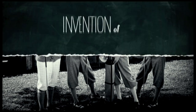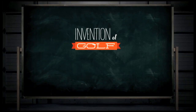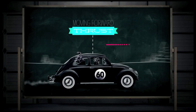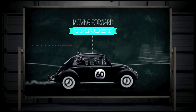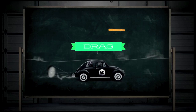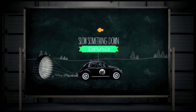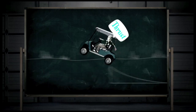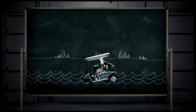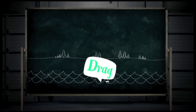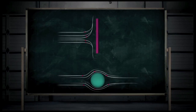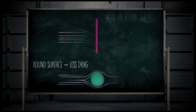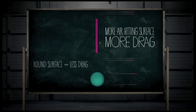With the invention of golf, man encountered two other forces of aerodynamics: thrust and drag. Thrust is the force that keeps an object moving forward. Drag is an opposite force that slows something down and makes it harder for an object to move. This golf cart has enough thrust to push it through air, but not enough to counter the drag of the water. What a drag! The shape of an object changes the amount of drag — most rounded surfaces have less drag than flat ones, and the more air hitting a surface, the more drag there is.